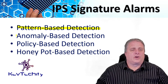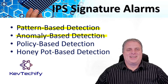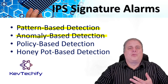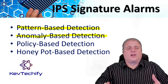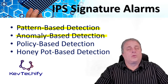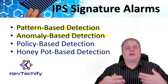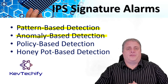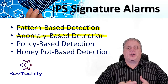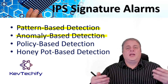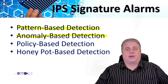The second trigger category is anomaly-based detection, also known as profile-based detection. It involves first defining a profile of what is considered normal network or host activity. This normal profile is usually established by monitoring traffic and creating a baseline. Once determined, any activity beyond a specified threshold will generate a signature trigger and action.